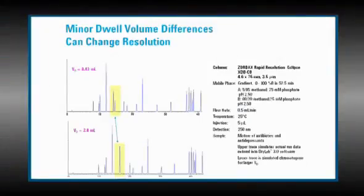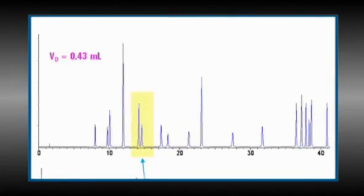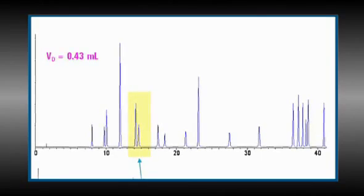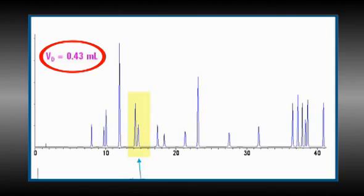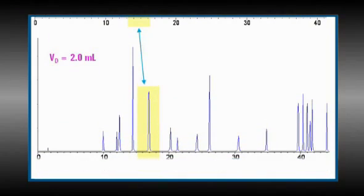On this slide, we see simulated gradient chromatograms for separations of a complex mixture. The upper trace is a simulation of the actual input data from the LC separation. The peak retention times were entered into DRYLAB with the actual dwell volume of 0.43 milliliters for an Agilent 1100 LC with a binary pumping system having the mixer bypassed.